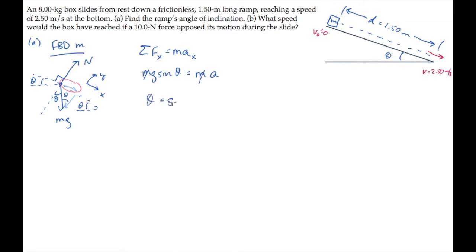We can solve for the angle theta. It equals the inverse sine of the ratio of the box's acceleration to g. If we knew the box's acceleration, we could solve for theta, but we don't, so we need to find it. We can do that using kinematics.